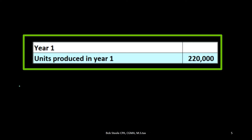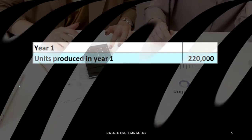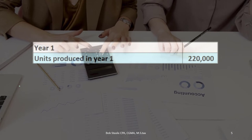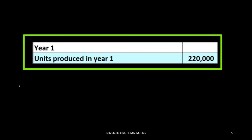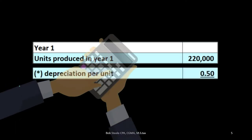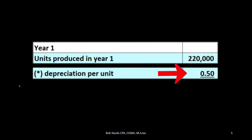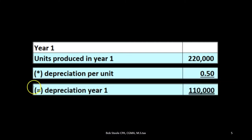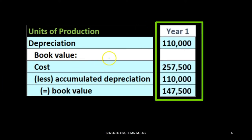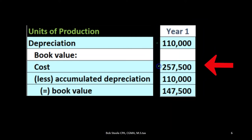We can then use this to calculate the depreciation each year. We first have to count how many miles, how many pages, or how many widgets were made. That's why it's a bit more difficult of a method, but more accurate in that we're measuring what is actually being produced. We take that count and multiply it by the depreciation per unit we calculated. That gives us the depreciation for year one — in this case, $110,000. The cost is $257,500, and accumulated depreciation after just year one is $110,000.